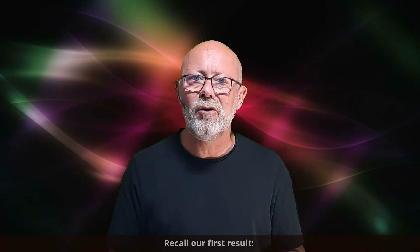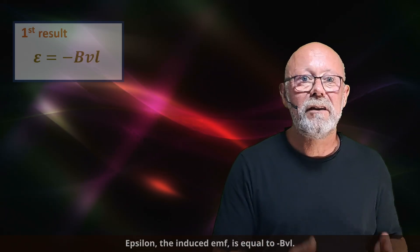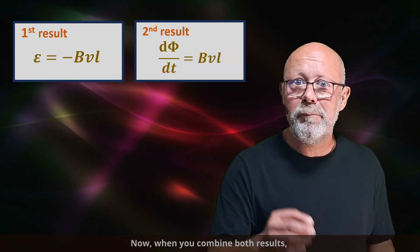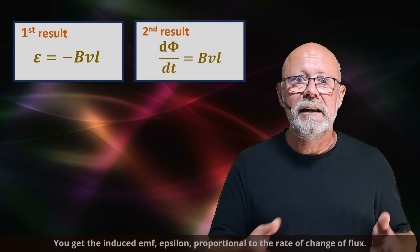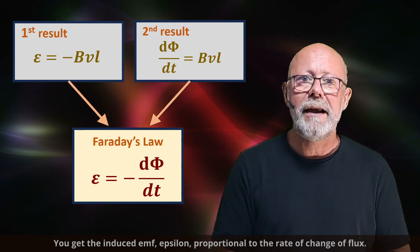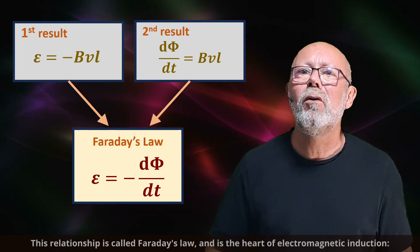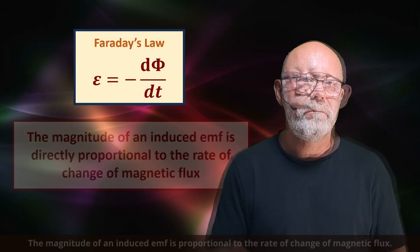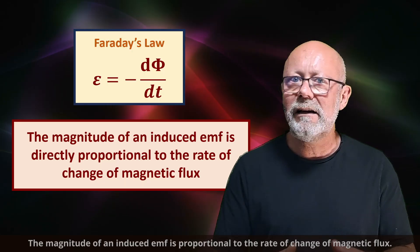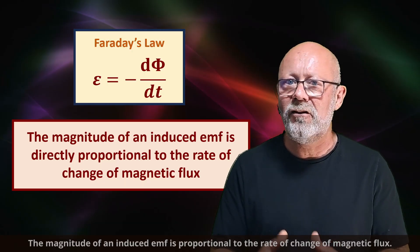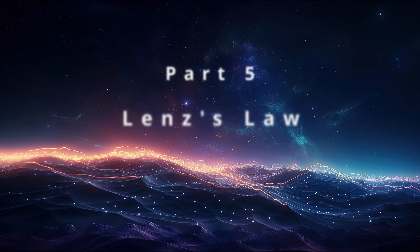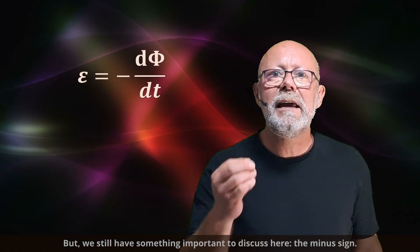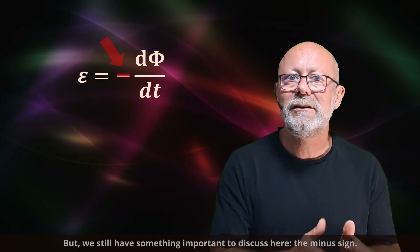Recalling our first result — epsilon, the induced EMF, equals minus BVL — and combining it with our second result, we get the induced EMF epsilon proportional to the rate of change of flux. This relationship is called Faraday's law and is the heart of electromagnetic induction: the magnitude of an induced EMF is directly proportional to the rate of change in magnetic flux. But we still have something important to discuss: the minus sign.